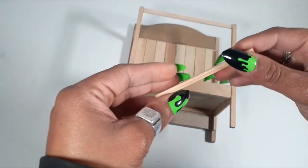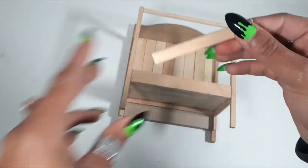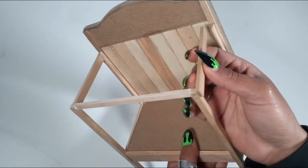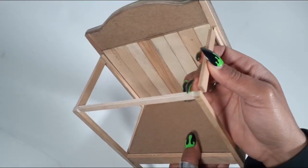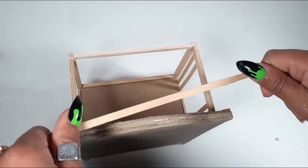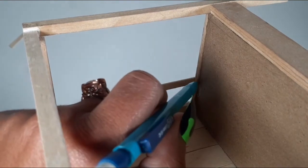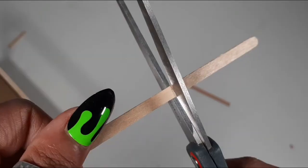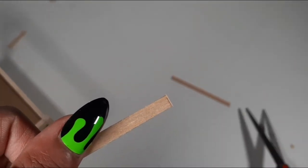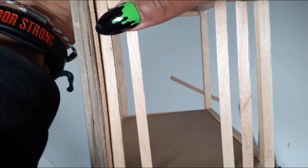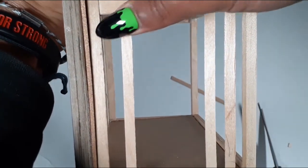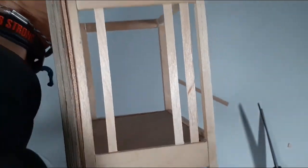For the sides, I'm using these regular popsicle sticks that I got from Walmart and I just glued two together. For the bars, it requires more skinny sticks. I'm going to mark it, cut it, and then make sure it fits. After we're certain, we can start piecing it all together.